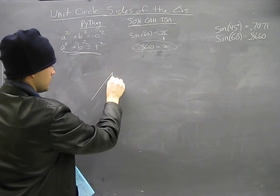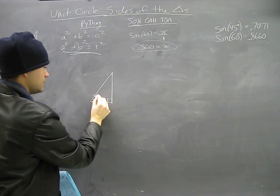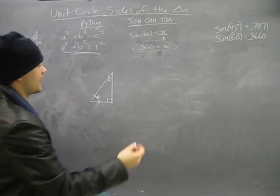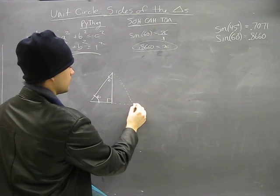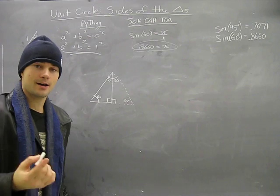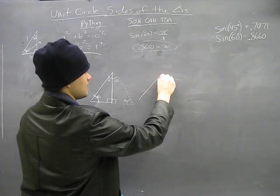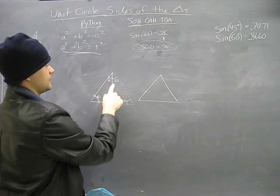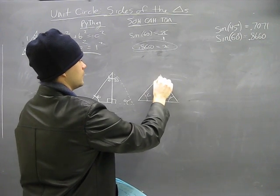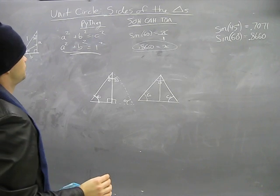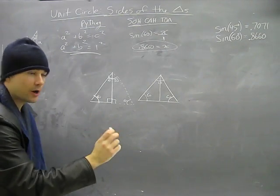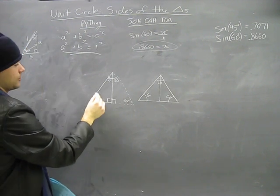Here's our triangle — 90 degrees, 60 degrees, 30 degrees. I'm going to make a copy of this triangle and flip it over. What I get is 60 degrees, 90 degrees, and 30 degrees. This looks familiar — it's an equilateral triangle: 60, 60, and 60. Our hypotenuse was 1 because we're on the unit circle, and since we flipped it, this side must also be 1. With an equilateral triangle, all sides are equal, so all three sides are 1.